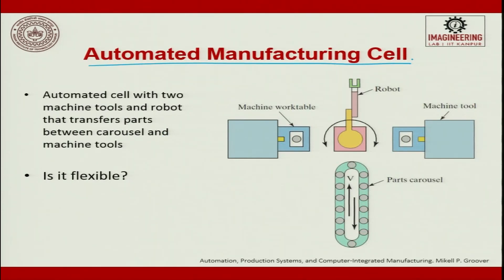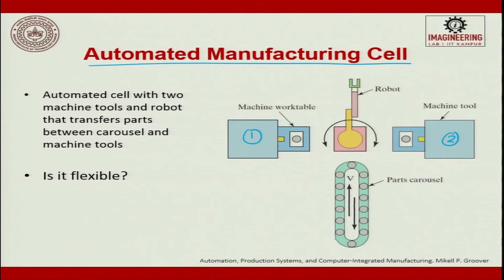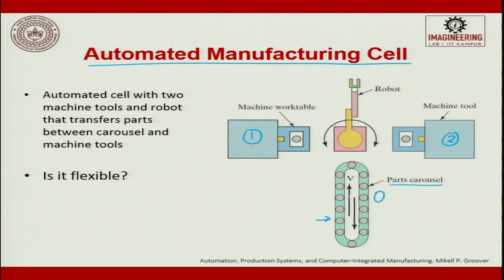An automated manufacturing cell consists of two machine tools and a robot arm that transfers parts between the machines and the carousel. A carousel is like the conveyor belt in airports where luggage comes around and you pull out your bag — it is a part carousel or conveyor belt. In a flexible manufacturing system, you should have an automated handling system and a storage and retrieval system.